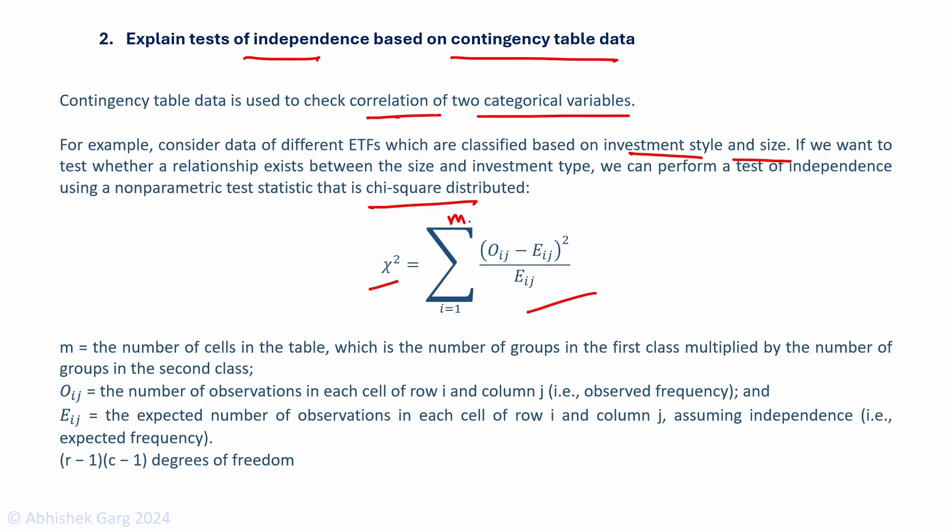The formula is given here. M is the number of cells in the table, which is the number of groups in the first class multiplied by the number of groups in the second class. Oᵢⱼ is the number of observations in each cell of row i and column j. Eᵢⱼ is the expected frequency assuming independence. The test stat has (r-1)(c-1) degrees of freedom.